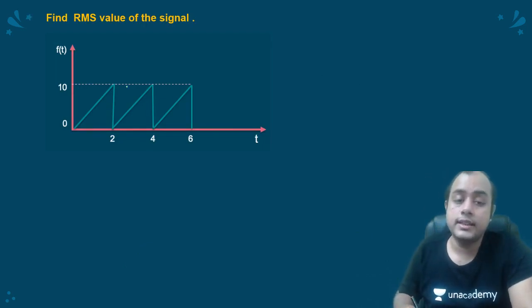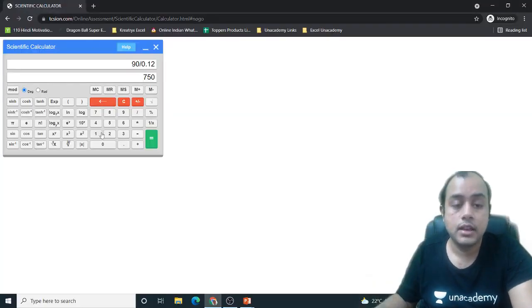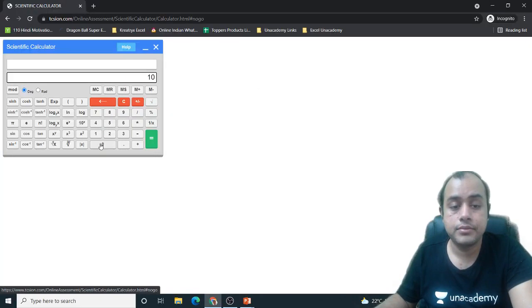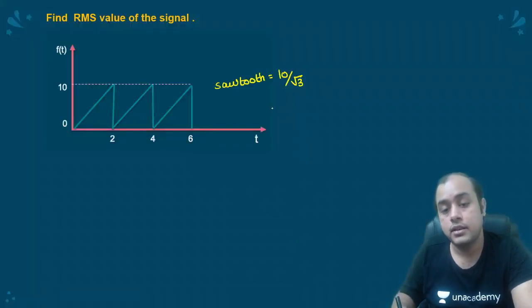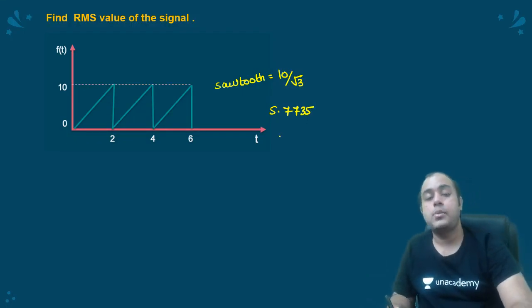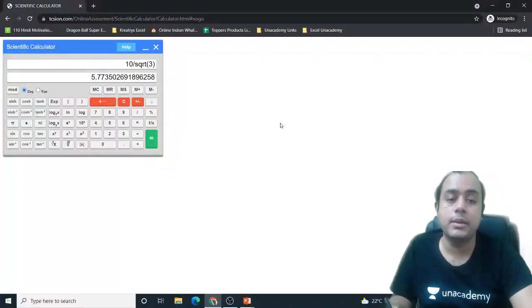RMS value. What is the RMS value of sawtooth wave? For sawtooth, it is actually peak by root 3, 10 by root 3. So let us see. I will write 10 by 3, then I will press root, 10 by root 3, 5.7735. See how easy is it to use the virtual calculator? So that is all from this video, my friend.